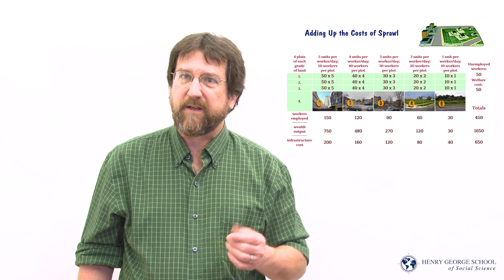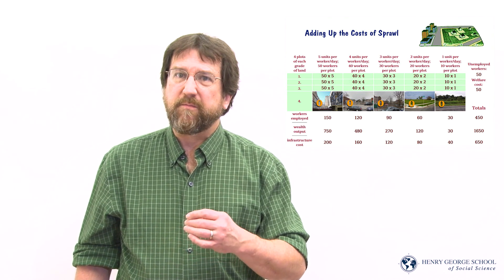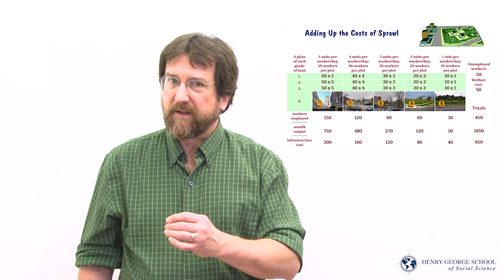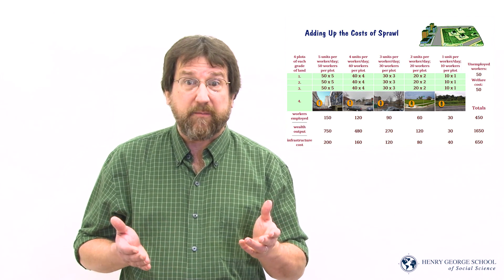Henry George reasoned that land speculation becomes an increasingly attractive investment as productivity increases and the economy grows. So land rent absorbs more and more of society's output until the cost of land gets so high that labor and capital begin to be unable to afford it.